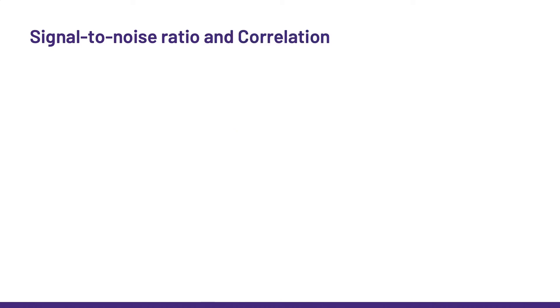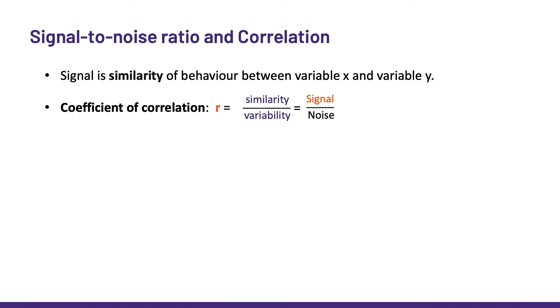So, the effect here, the signal is similarity, right? Similarity between x and y. When x goes up, so does y and vice versa, and all that in a linear fashion. So, there we go. The coefficient of correlation r is just that, a ratio of the absolute effect, the similarity of behavior between x and y, over the variability of these variables.